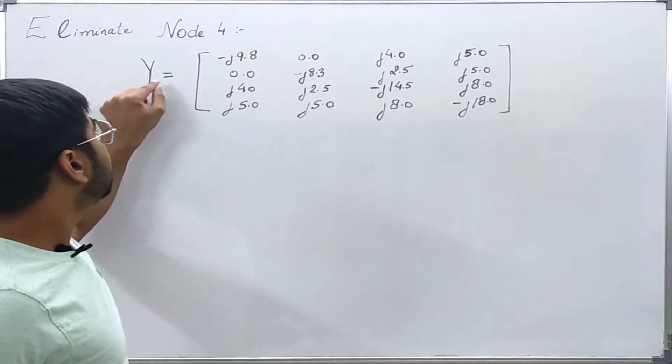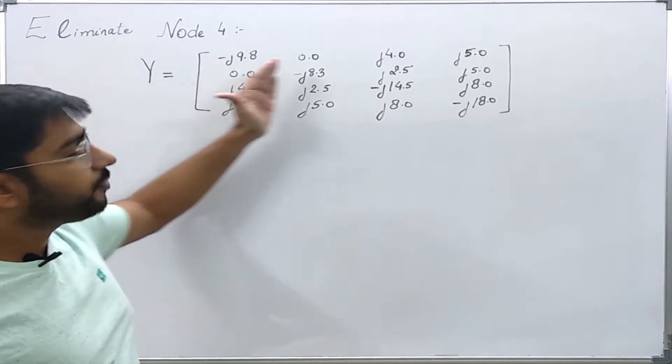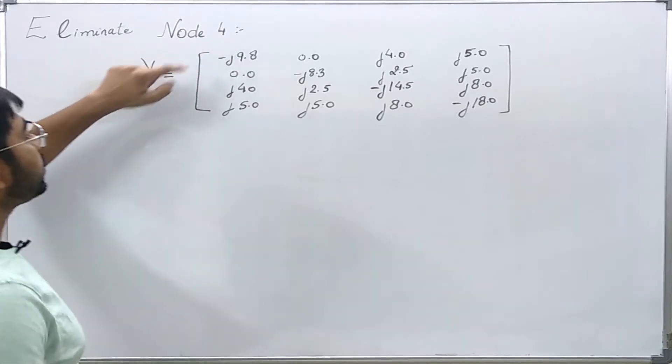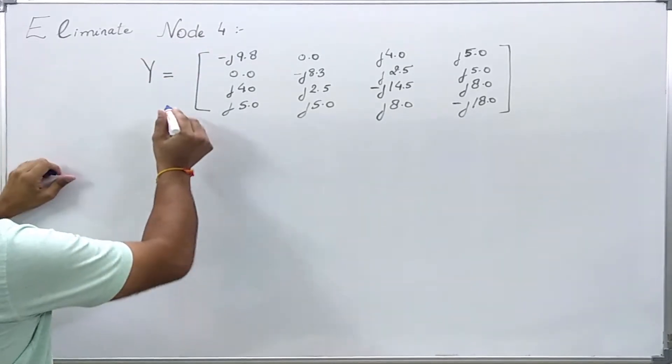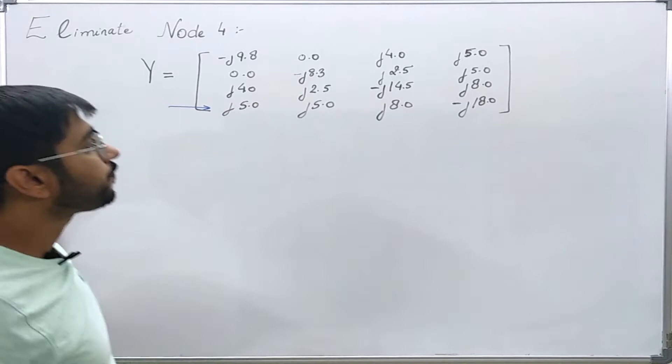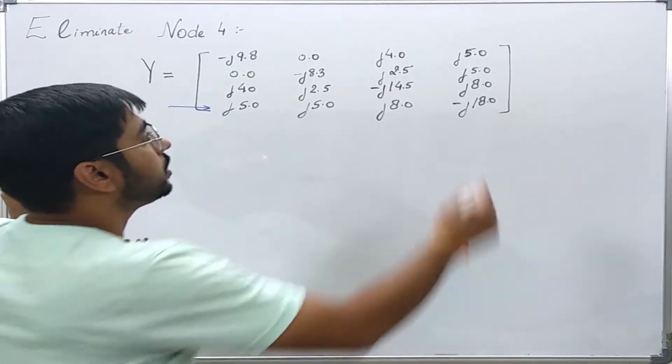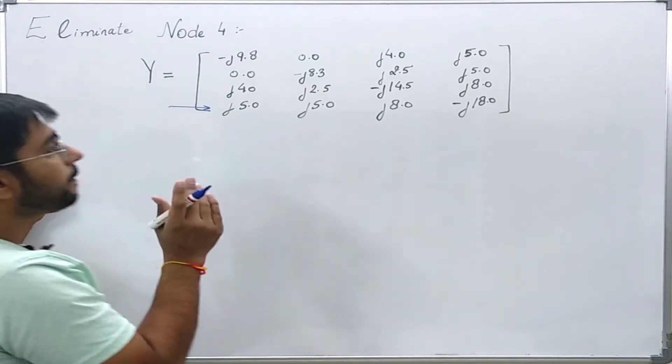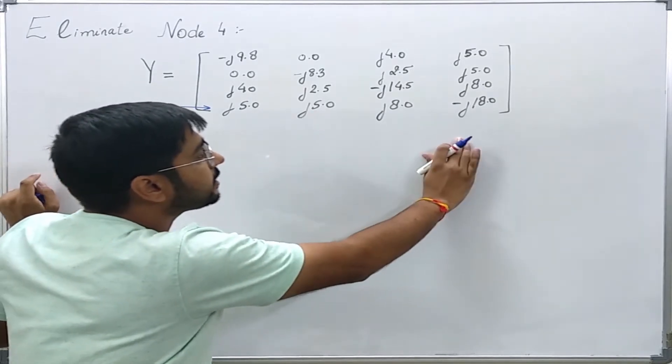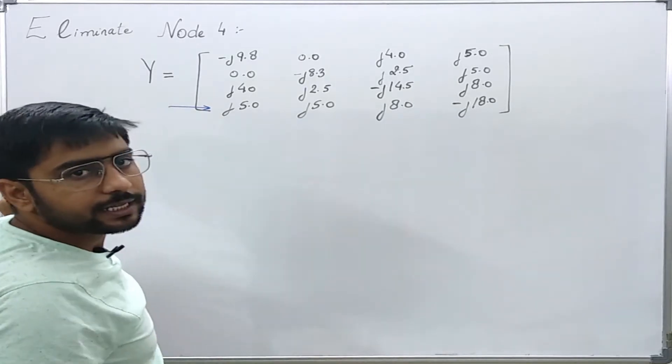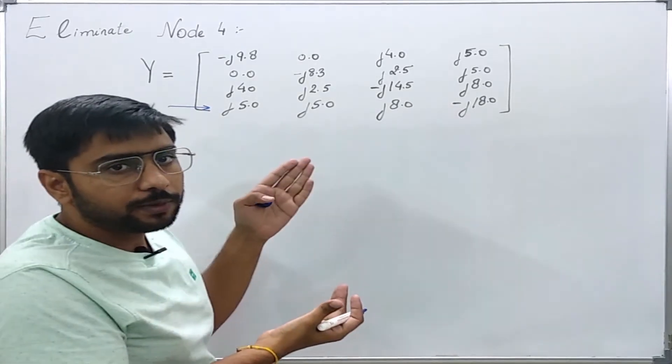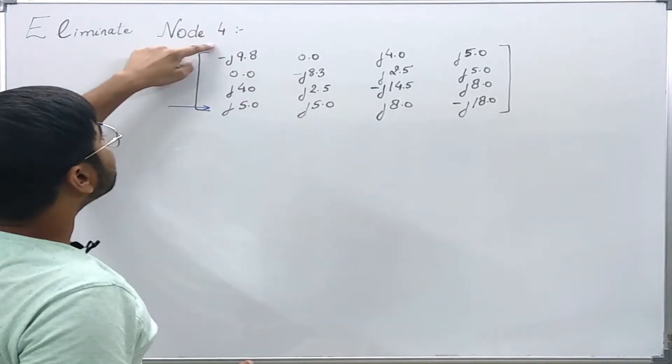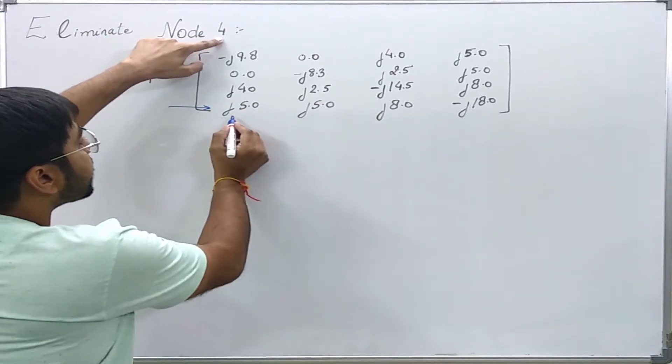Here a matrix of 4 by 4 order is given and we are asked to eliminate node 4, that is we are asked to eliminate this node. We have seen that if I partition this given matrix in such a way that I can utilize my previous formula then it will be very easy to eliminate this node, and furthermore it is observed that node 4 is the highest number node.